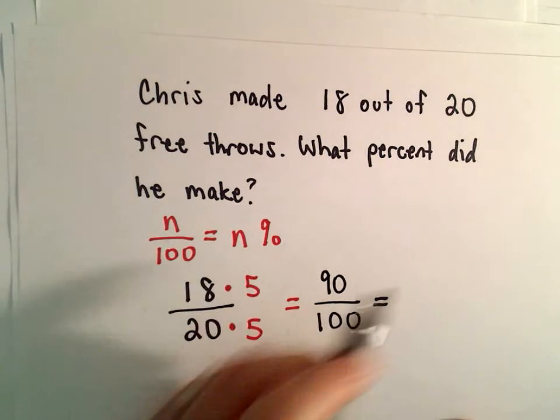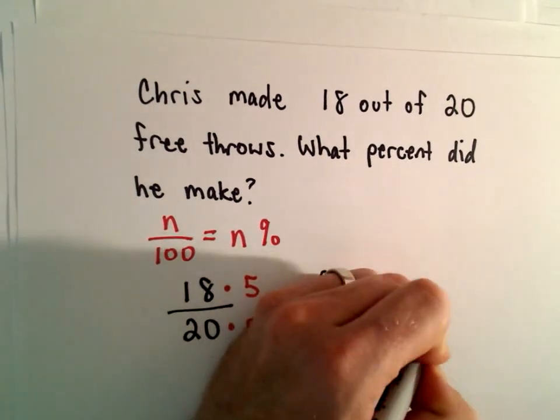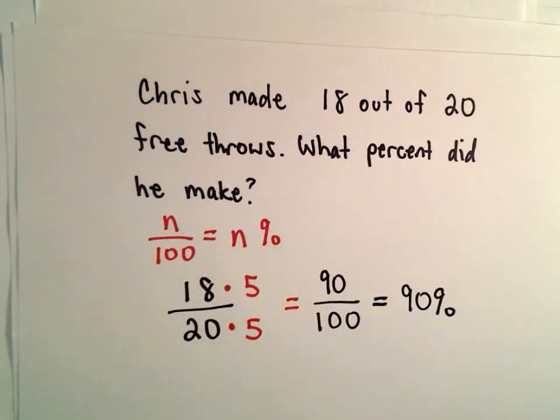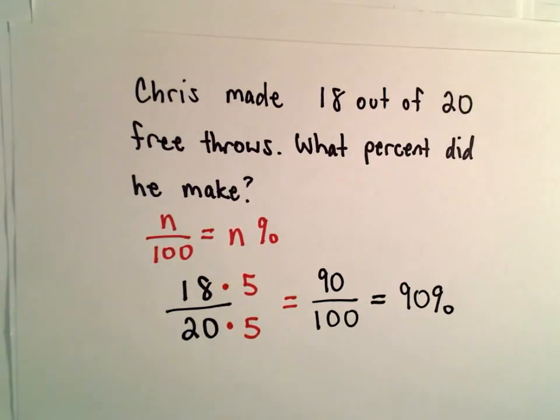90 over 100 is going to be the same thing as 90 percent. So if Chris makes 18 out of 20 of his free throws, we could say he's a 90 percent free throw shooter.